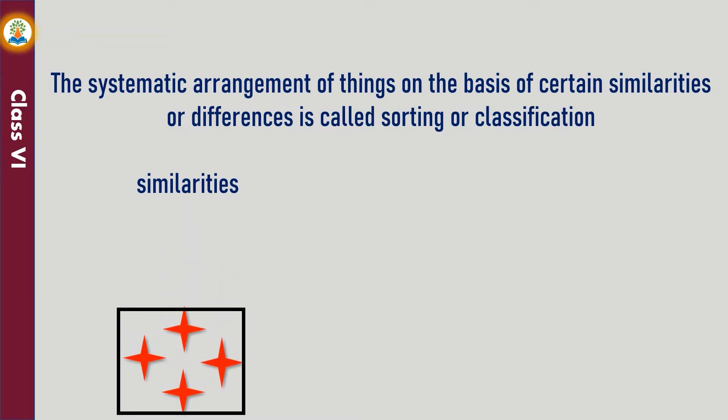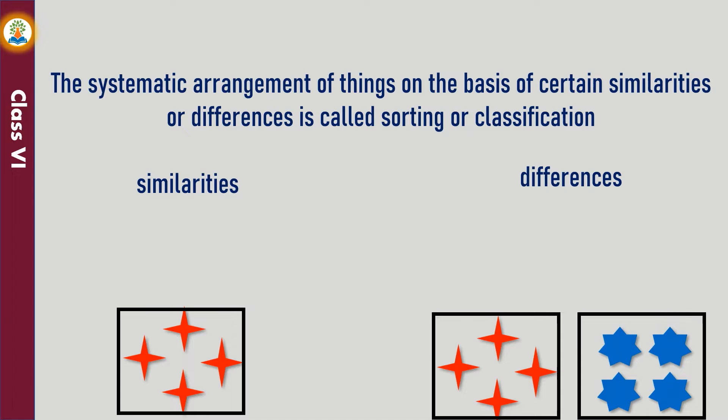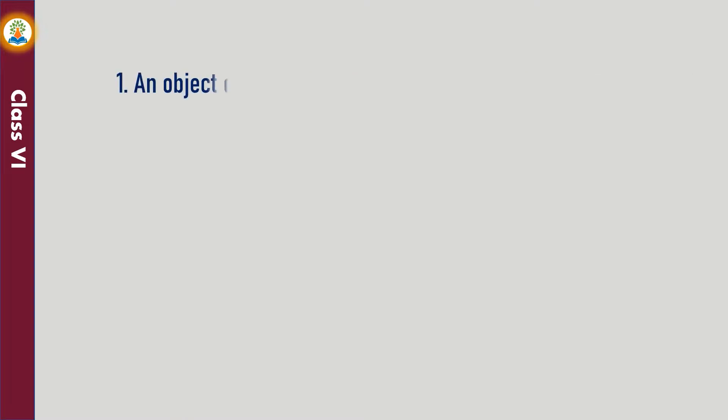Similarities help to arrange things in the same group. Differences help us to arrange things into separate groups. An object can be made from different kinds of materials.